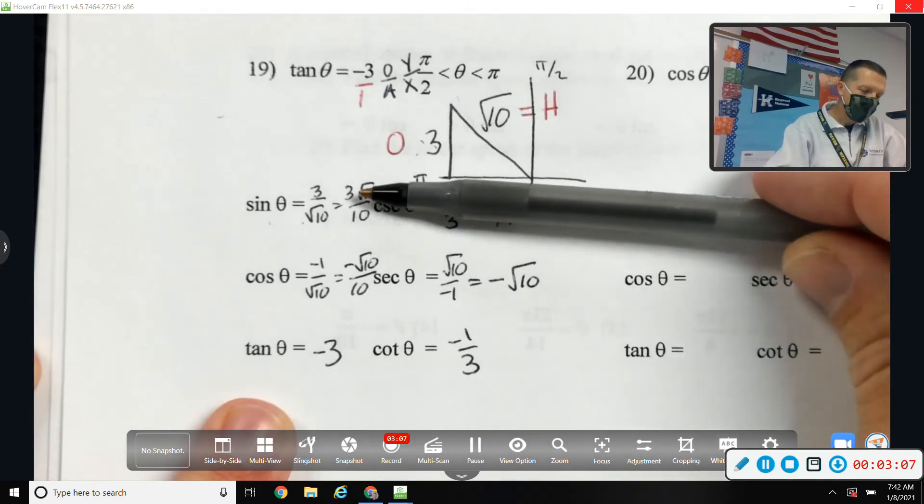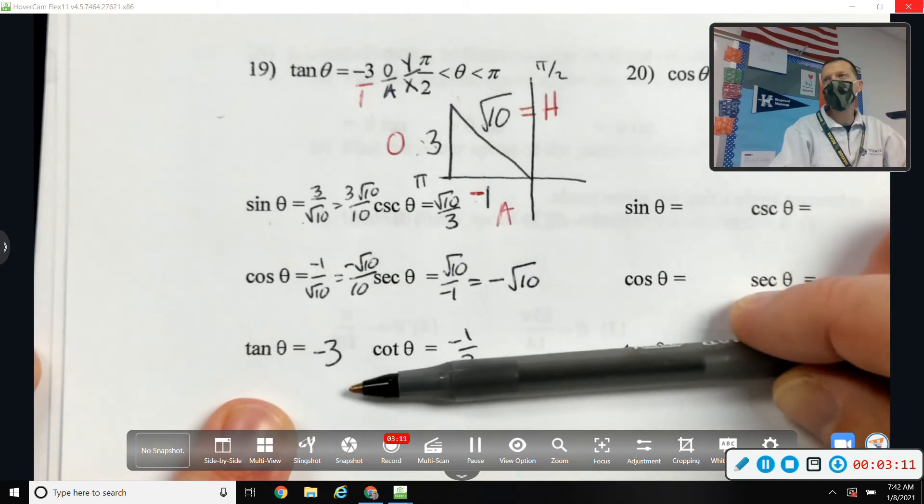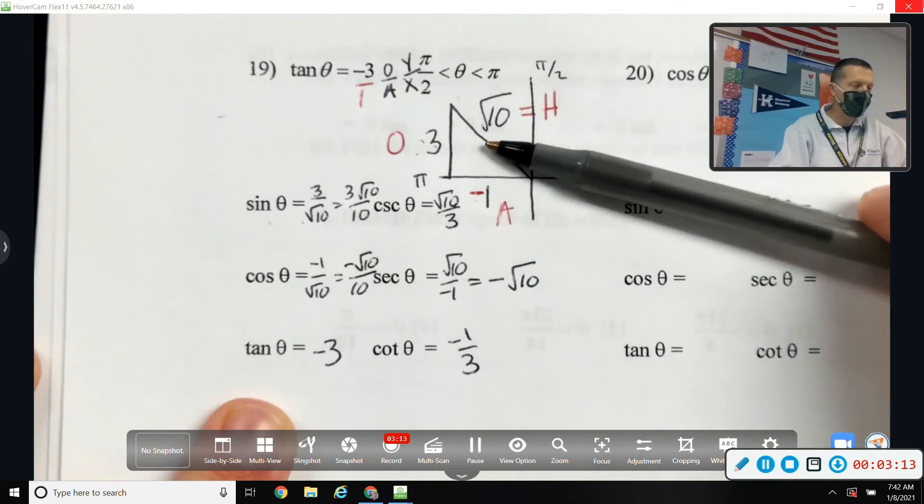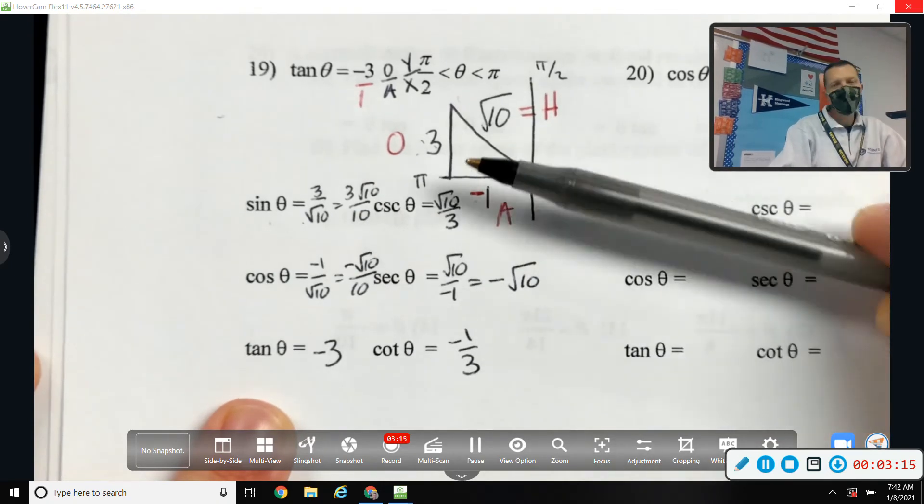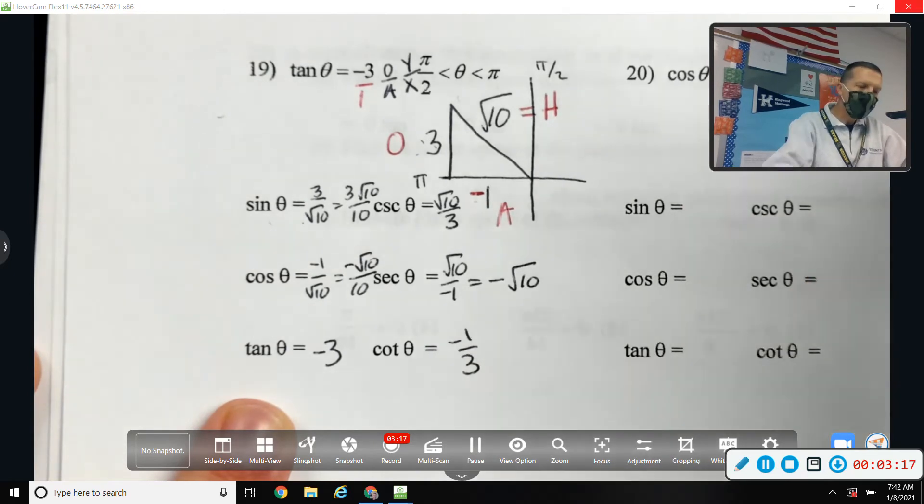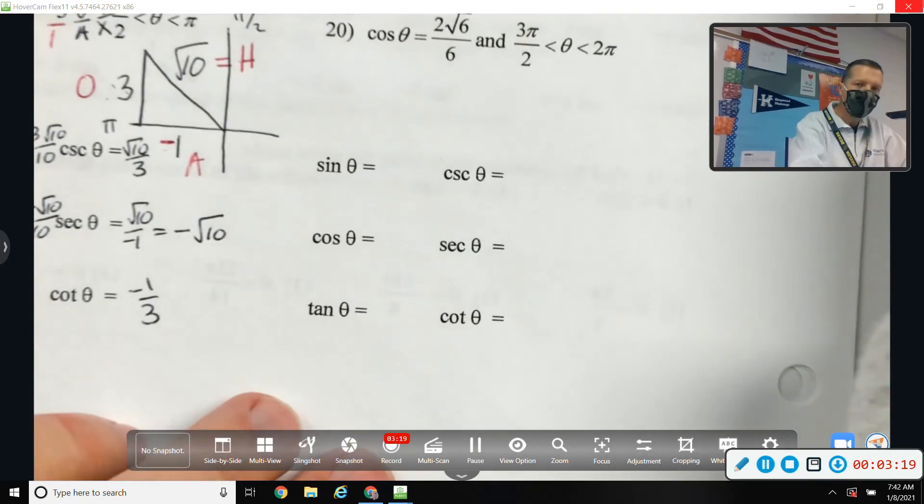Again, what you write as the answer to the problem is not really the main part of the problem. The main part of the problem is drawing the triangle right. After that, it's just SOH CAH TOA. Let's do one more. Let's look at number 20 and then we'll move on.